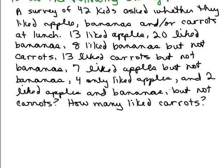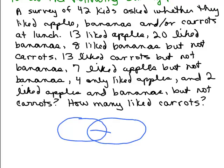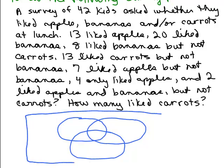We're talking about apples, bananas, and carrots. I'm going to draw a Venn diagram of three sets and label them A, B, and C. A will be the set of kids that like apples, B will be the set of kids that like bananas, C will be the set of kids that like carrots. Keep in mind that you can't just add all these numbers together arbitrarily.